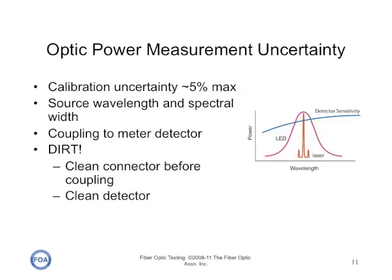The uncertainty of an optical power meter measurement depends on the calibration, the source wavelength and spectral width, the coupling to the meter, and dirt — because it's very important to clean the connectors before coupling to the meter. It's also important to occasionally clean the detector in the power meter itself.